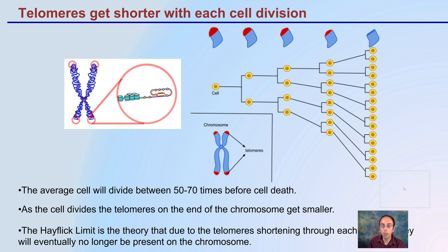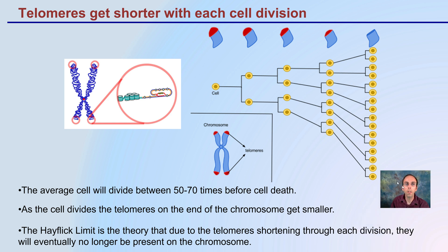Now why are these important? Why are we looking at them and what are they? It's important because these end caps get shorter with each cell division. Here we see a cell going through a series of divisions with the telomeres slowly being degraded. You can think of this as being like the eraser on a pencil — the more times you use it, the shorter it gets. An average cell will divide between 50 and 70 times before the cell ends up dying.